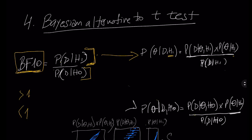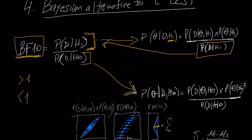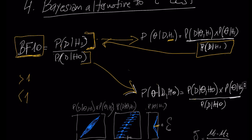This is for the model of the alternative hypothesis. One part of that equation has the value we are looking for: the probability of the data given the alternative hypothesis. Likewise, we do the same with the probability of the data given the null hypothesis.